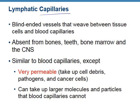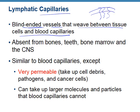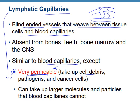Lymphatic capillaries are blind-ended vessels that weave between the tissue and blood capillaries. They're similar to blood capillaries but very permeable. They can take up cell debris, pathogens, cancer cells, and larger molecules than blood capillaries can. We do have a few places where lymphatic capillaries are absent: the brain and spinal cord, where cerebral spinal fluid helps drain waste. In bones and bone marrow, we have really large sinusoidal capillaries where hemocytoblasts and stem cells can enter the bloodstream directly.